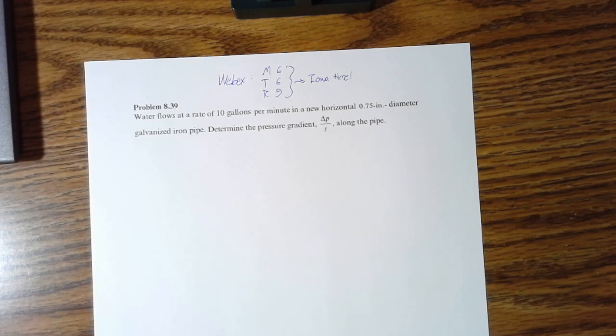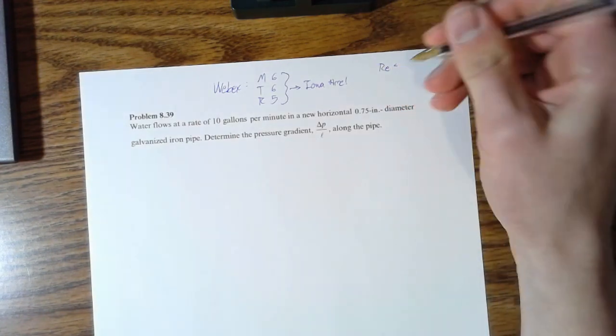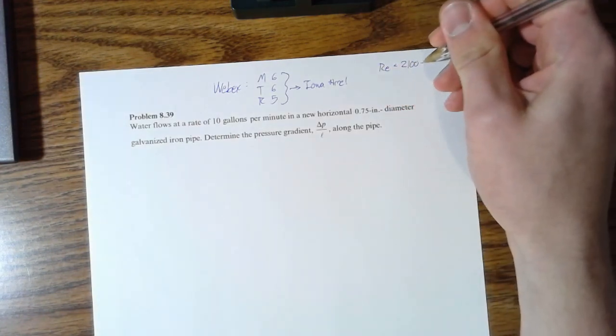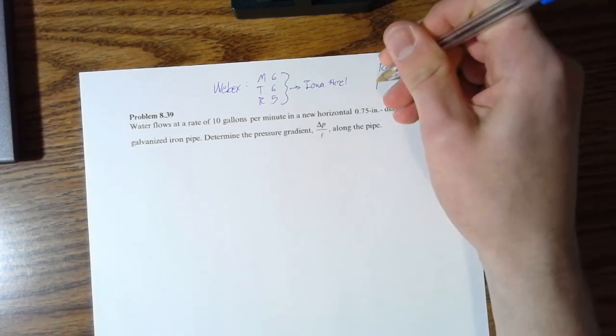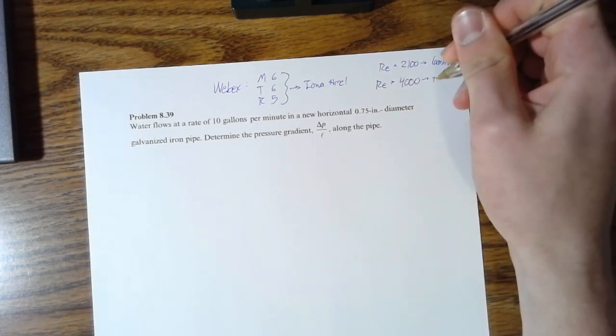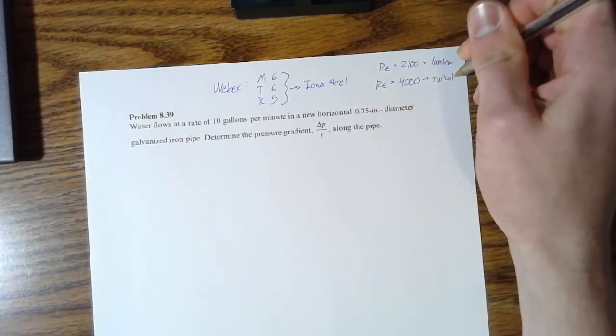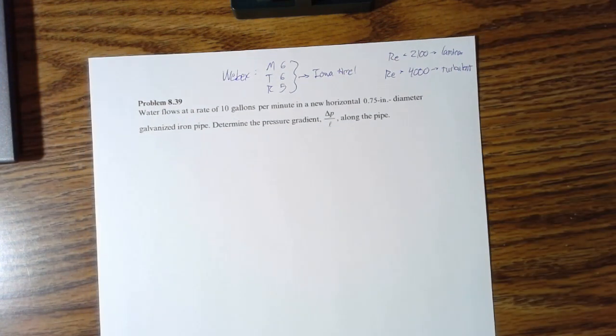Remember, if the Reynolds number is less than 2100, that's laminar. And if the Reynolds number is greater than 4000, that's turbulent. Alright, you're going to see that over and over again, probably won't ever forget it.